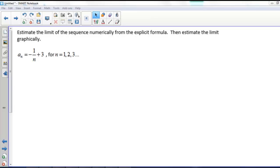We want to estimate the limit of the sequence numerically from the explicit formula and then estimate the limit graphically. So we have a sub n equals negative 1 divided by n plus 3 for n equals 1, 2, 3, etc.